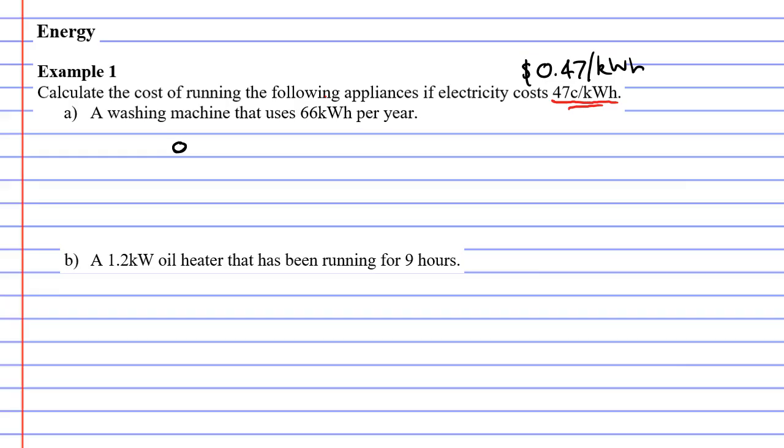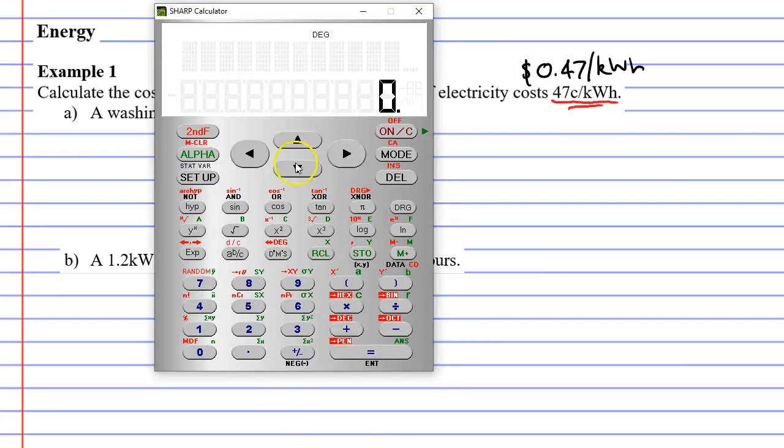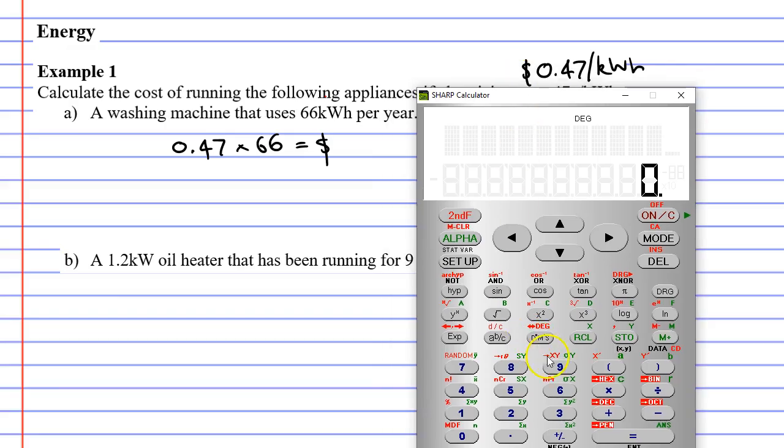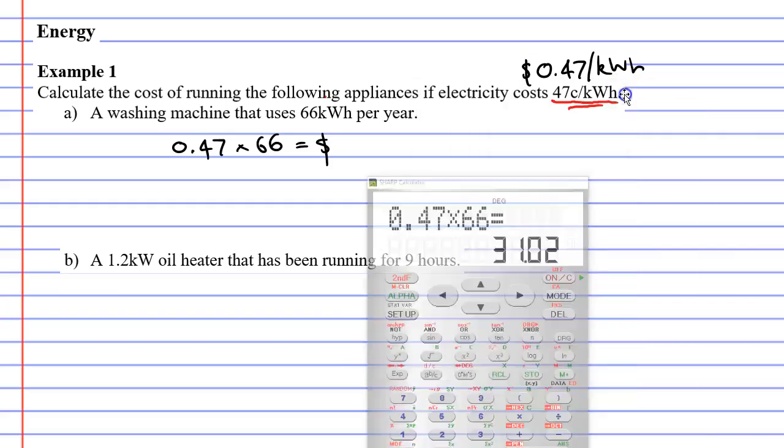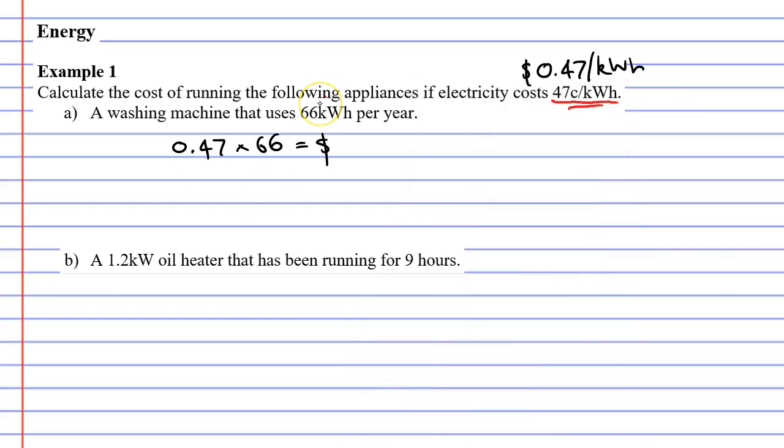This way when we multiply it, so we go 0.47 times 66, my answer will be in dollars. So we'll bring up our calculator here, and we'll go 0.47 times 66.